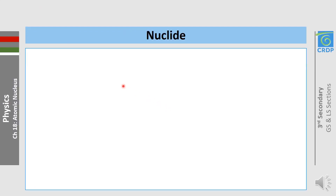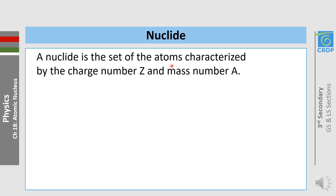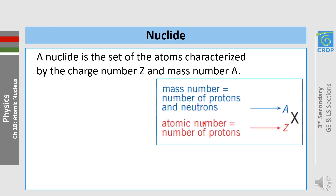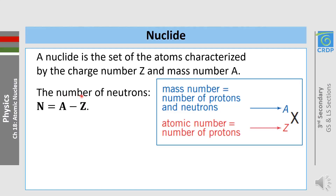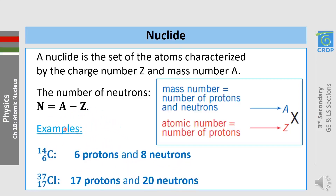The nuclide is the set of atoms characterized by the charge number Z, which is the number of protons, and the mass number A, which is the number of protons and neutrons. We can call them nucleons, and the atom is represented as X-A-Z. We can calculate the number of neutrons as N = A - Z. For example, Carbon-14 has 6 protons and 8 neutrons, and Chlorine-37 has 17 protons and 20 neutrons.